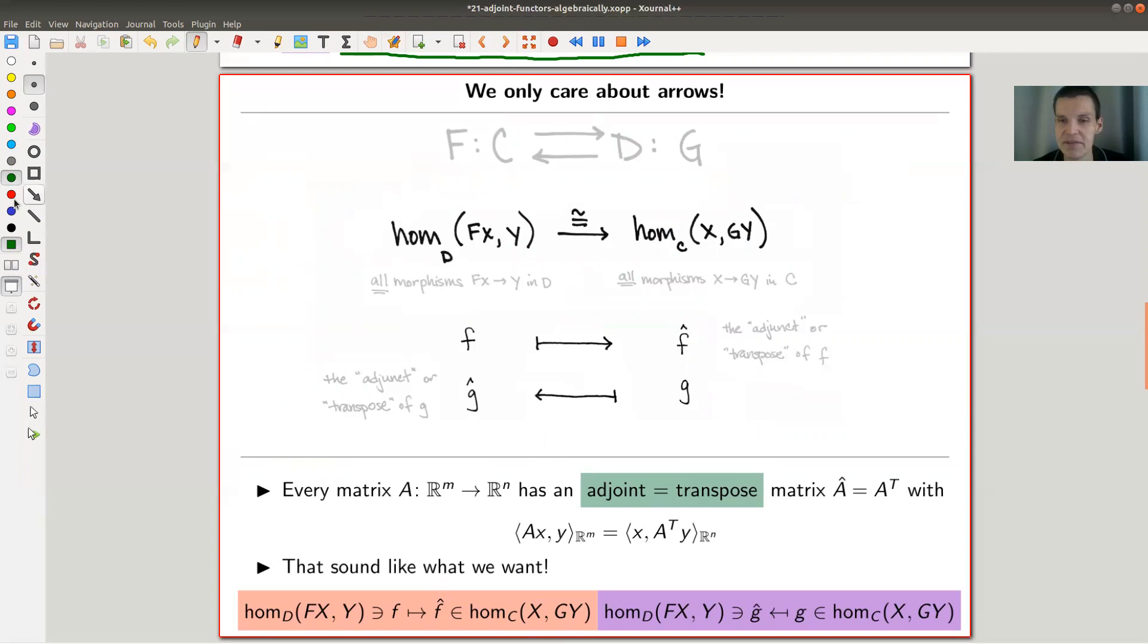And the only thing we want in the end is this funny inequality here. So we only care about having isomorphisms on morphisms, on arrows, because we're doing category theory. I don't care for objects. I only want isomorphisms on the level of arrows.